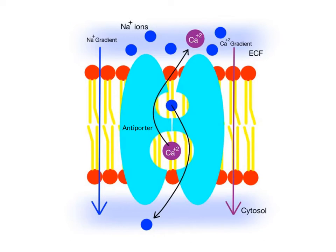The sodium ions are, again, moving passively downhill from high to low concentration into the cytosol. But the secondary solute, in this case calcium ions, is being pumped out of the cell from low concentration in the cytosol to high concentration in the ECF.